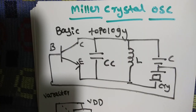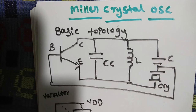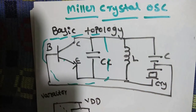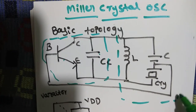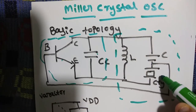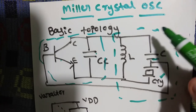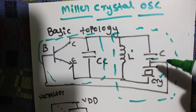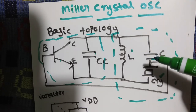Next we discuss the Miller crystal oscillator, which is a higher version of the crystal oscillator. The basic topology uses a FET as the amplifier, with a coupling capacitor and a feedback network. In the Miller crystal oscillator, the feedback network consists of the crystal along with a series capacitance and a parallel inductance — this particular topology is known as the Miller topology.